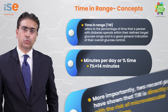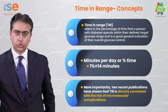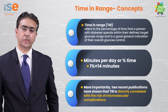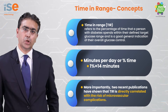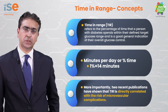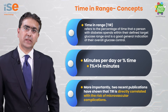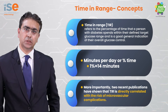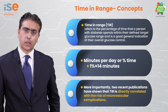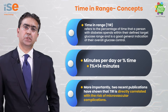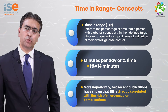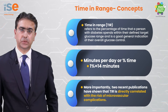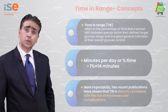More importantly, two recent publications have shown that time in range is directly correlated with the risk of microvascular complications. In a study published in Diabetes Care, based on self-monitored blood glucose readings from the Diabetes Complications and Control Trial, for every 10% reduction in time in range, the risk of retinopathy increased by 64% and microalbuminuria by 40%.